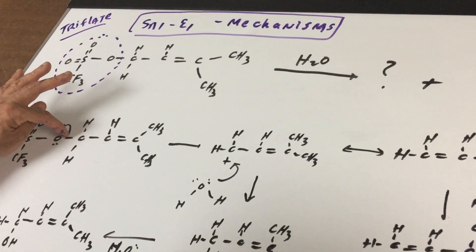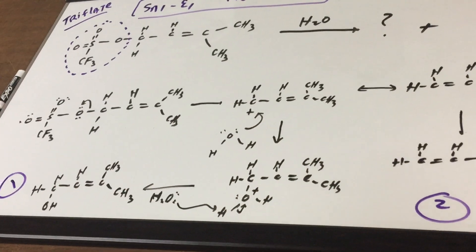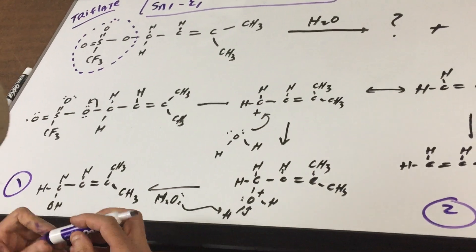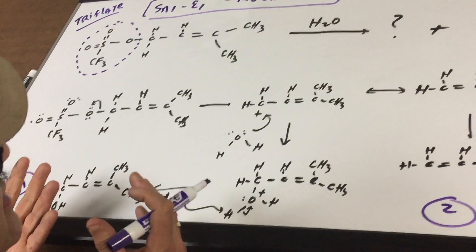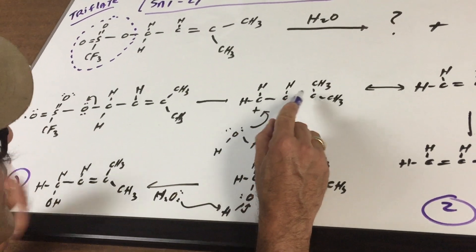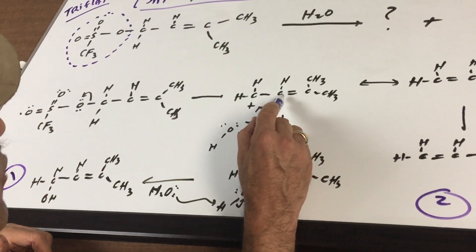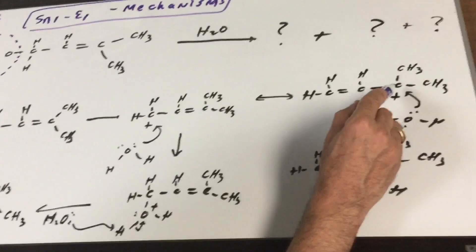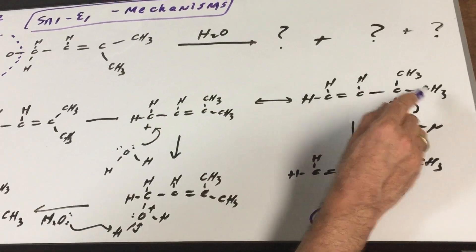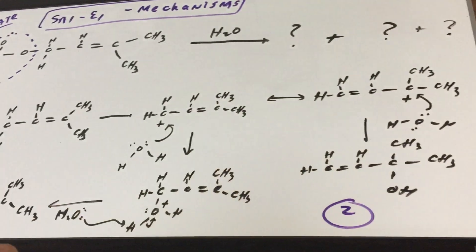What I'm doing is I'm going to let this group leave and I form a carbocation. Normally a primary carbocation is not stable, but this is a primary allylic and it's about as stable as a secondary. And as you can see, if we move the bond over, you would go for a tertiary allylic. So, we have a primary allylic and a tertiary allylic.